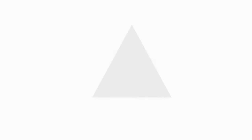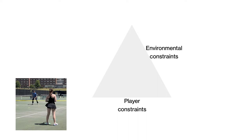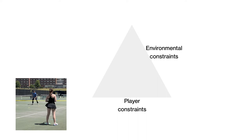When we look at constraints, the environment constraint is initially how we set up, but then we look at the player constraints. The intent within the learning is to provide a landscape of available affordances, such as smaller tennis courts and slow bouncing balls, and gradually increase the challenge of tasks that supports the emergence of functional adaptive movement behavior.